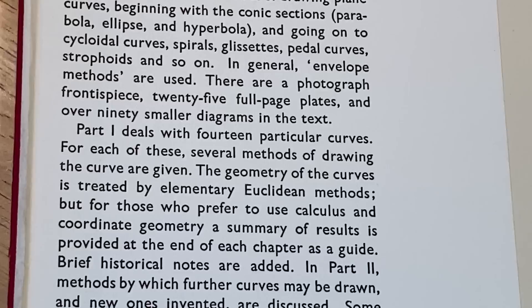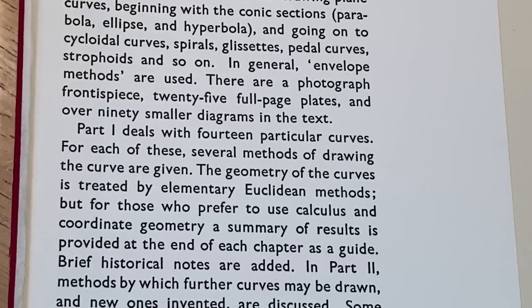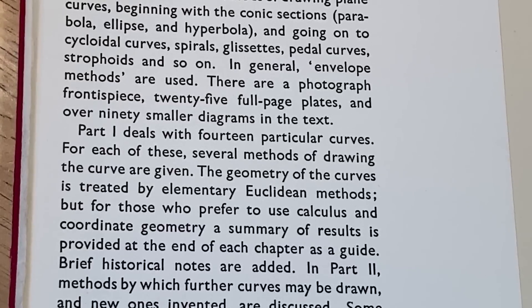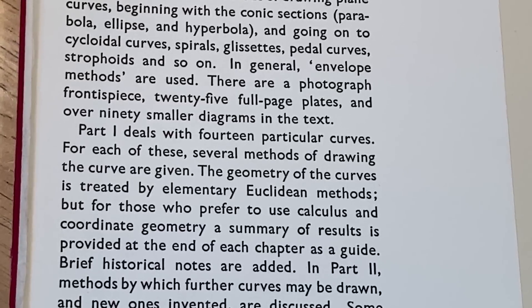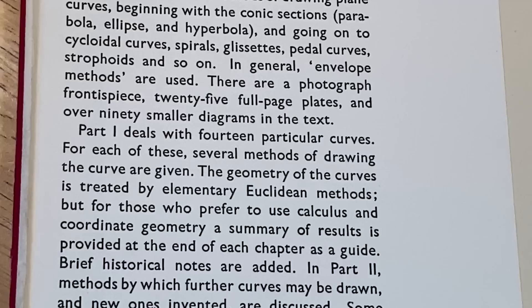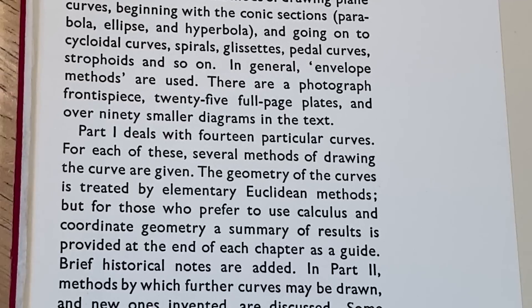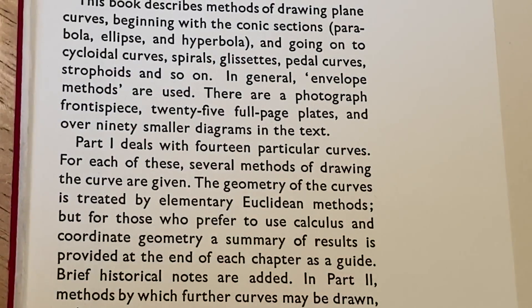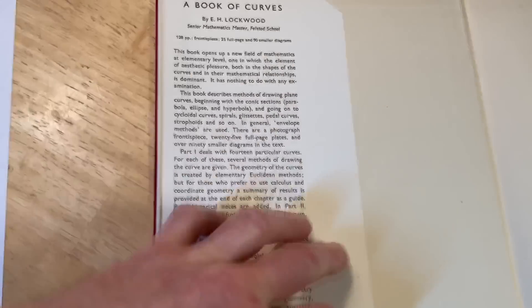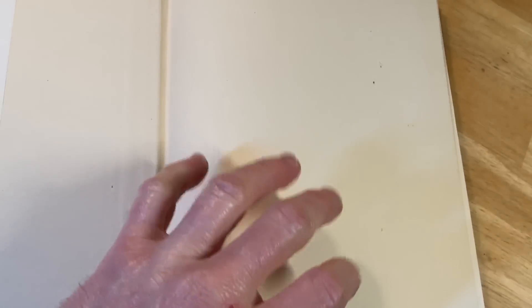Part one deals with 14 particular curves. For each of these, several methods of drawing the curve are given. The geometry of the curves is treated by elementary Euclidean methods. Let's take a look further in this book and look at some of these graphs — I can't wait, we just have to look.